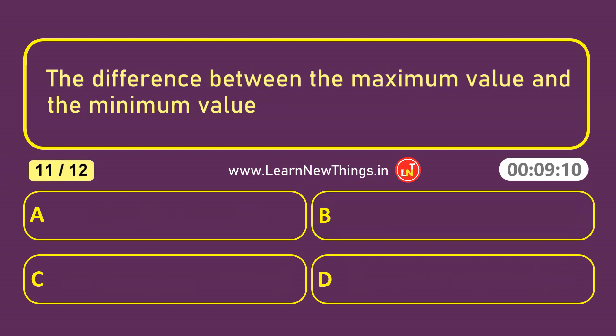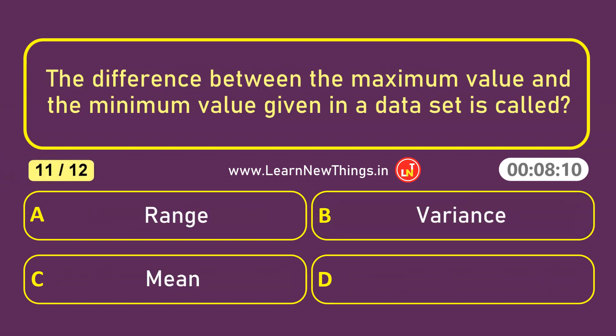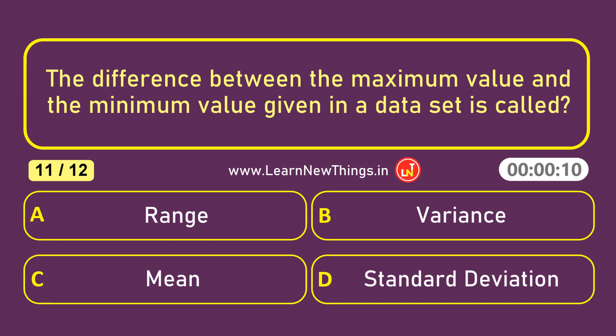The difference between the maximum value and the minimum value given in a data set is called the Range.